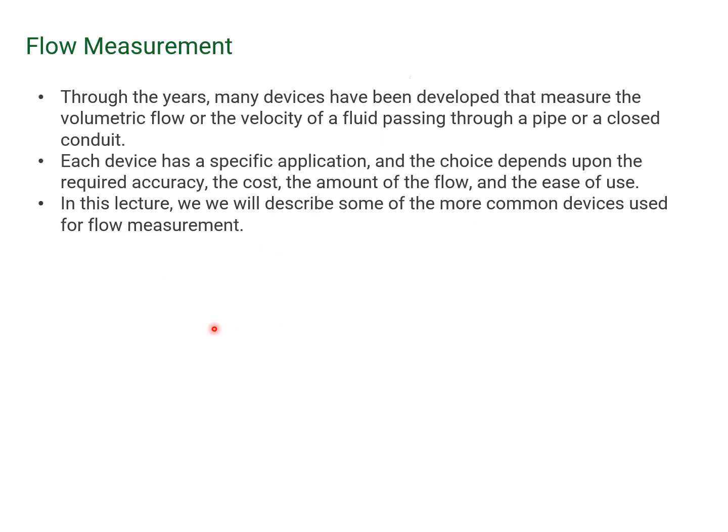Throughout the years, many devices have been developed that measure the volumetric flow or the velocity of a fluid passing through a pipe or a closed conduit. Each device has a specific application and the choice depends upon the required accuracy, the cost, the amount of the flow, and the ease of use. In this lecture, we will describe some of these more common devices used for flow measurement.